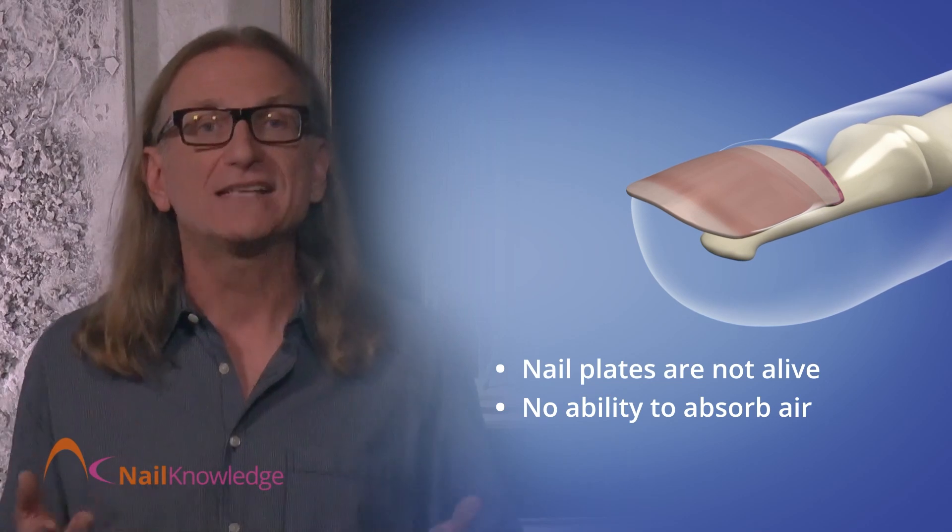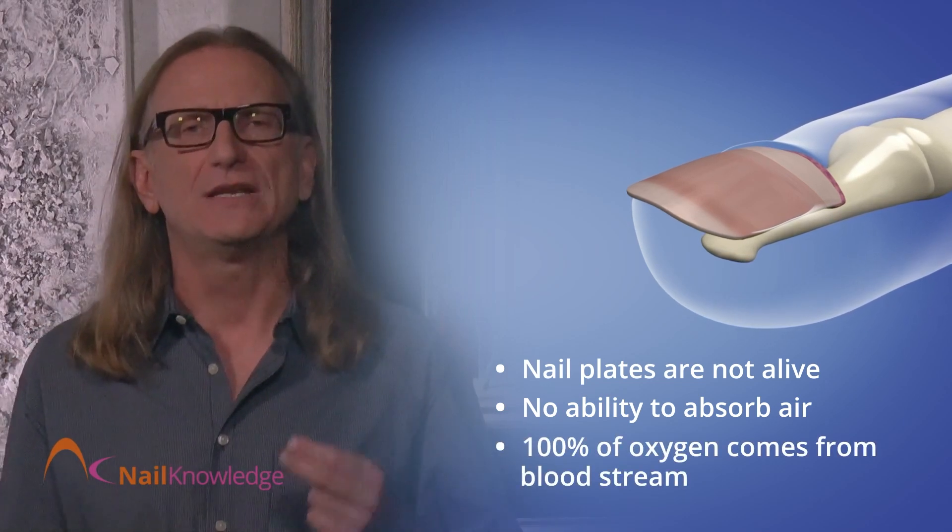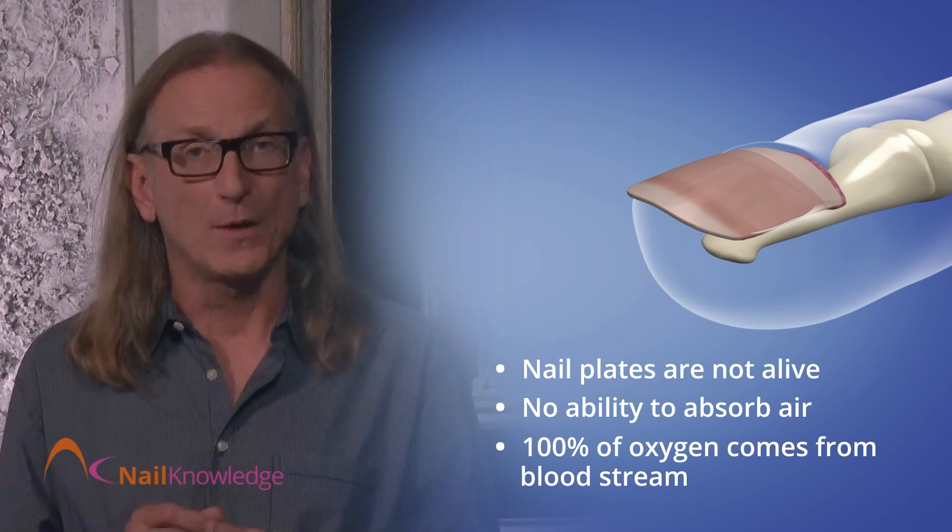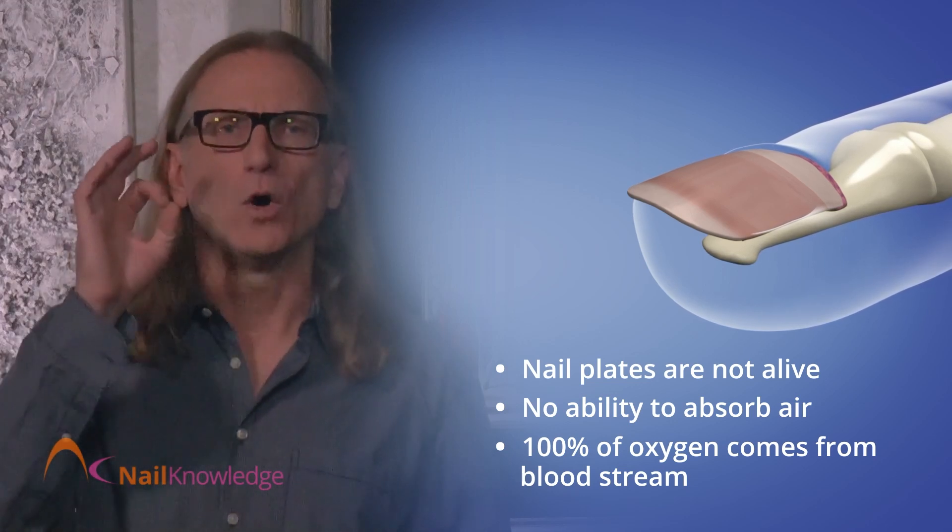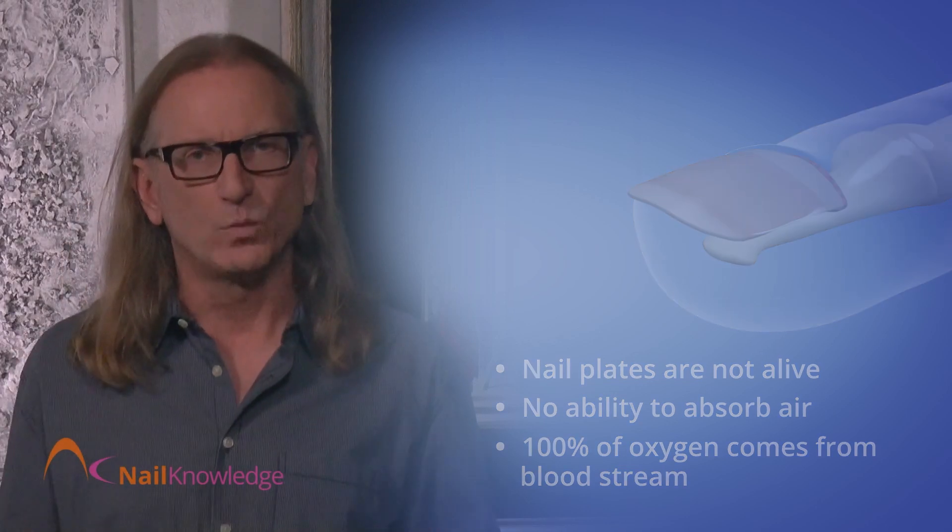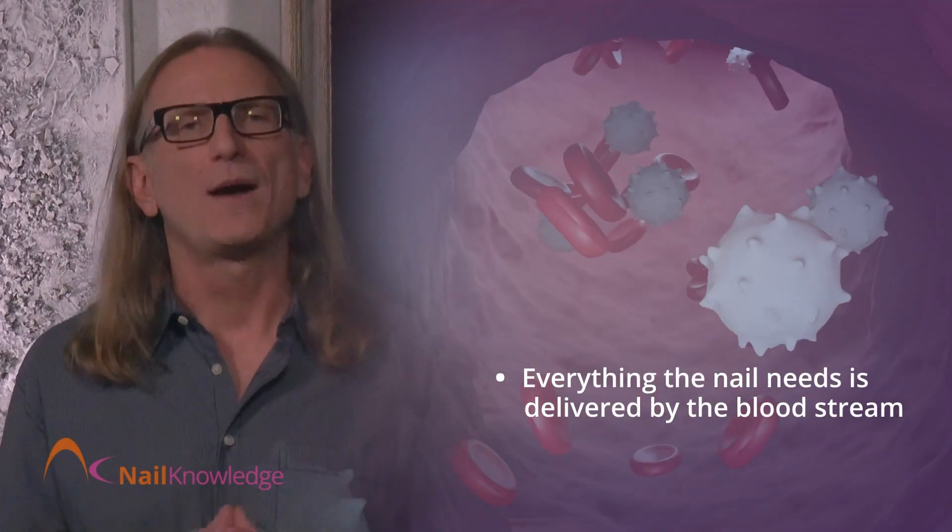100% of the oxygen needed by the nail matrix, that's where the nail plate grows from, comes from the bloodstream. 0% comes from the outside world. Everything the nail plate needs to properly grow and function is delivered to the nail plate by the bloodstream.